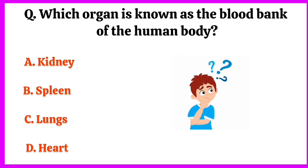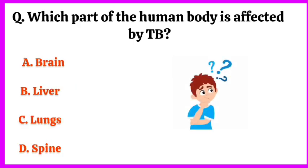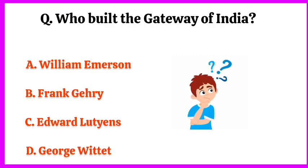The correct answer is option B: spleen. Which part of the human body is affected by TB? The correct answer is option C: lungs. Who built the Gateway of India?